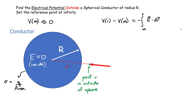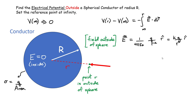We're first going to consider the electrical potential outside the spherical conductor of radius R. The green point is outside. I'm coming in from very far away — we set the reference point at infinity, so the potential is zero when we're really far away. Outside the sphere, if you use Gauss's law, the electric field is simply given by the same expression as a point charge, as long as the point I'm evaluating is outside the radius of the sphere.